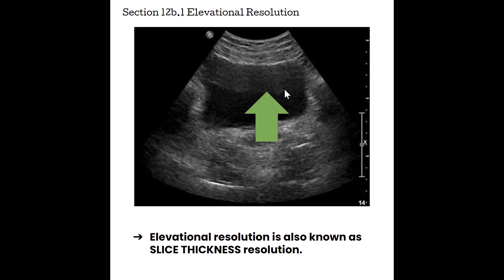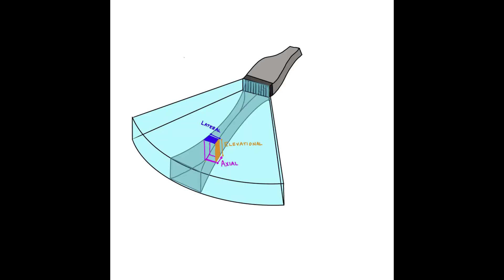Elevational resolution grabs echoes from other structures that sit above or below the main part of the beam. Because of this, it is also known as slice thickness resolution. Looking at all three resolutions: axial resolution is parallel with the sound beam, represented by the pink arrow. Lateral resolution is the side-to-side of the sound beam, concurrent with beam width, represented in blue. Elevational resolution is the height or thickness of the beam, represented in orange.